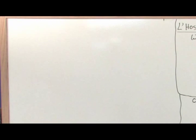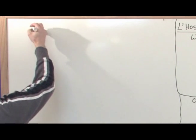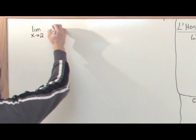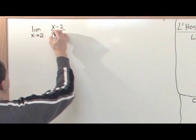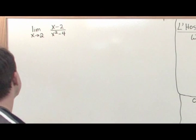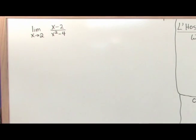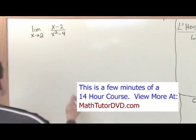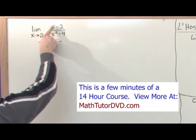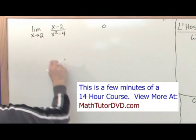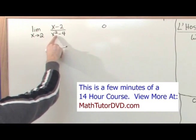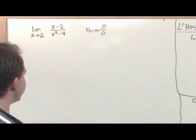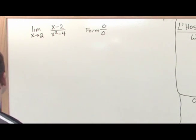The first problem: let's say we're taking the limit as x approaches two of the function (x minus two) over (x squared minus four). The first thing you want to do is find out what form this is. If you plug in two, you get two minus two equals zero on top. On the bottom, two squared is four, and four minus four is zero. So you have the form zero over zero, which means L'Hopital's Rule applies.